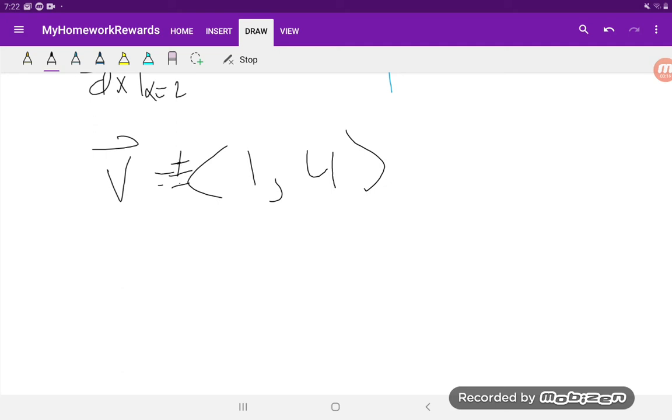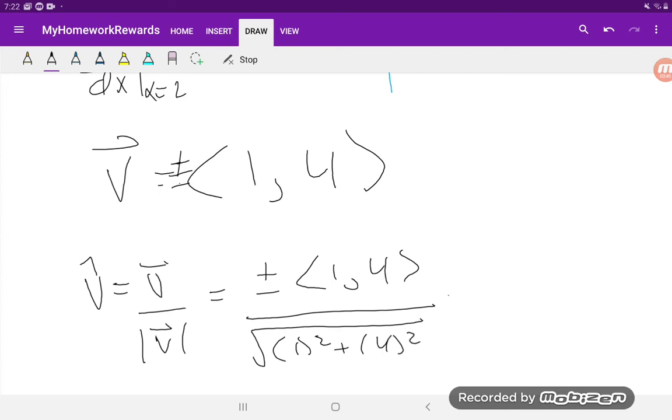So now that we have the vector, we want to find the unit vector, v hat, which is equal to the vector divided by its magnitude. Pause the video here and try to solve for this unit vector. Our vector up here is plus or minus (1, 4). And then divide it by the magnitude, which is just 1 squared plus 4 squared, which equals plus or minus (1, 4) divided by the square root of 17.